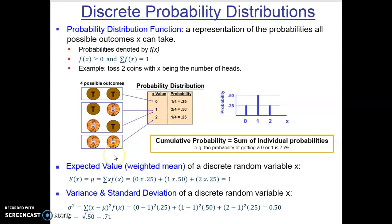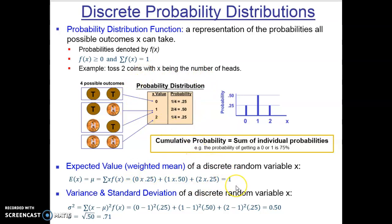We may want to calculate the expected value, also known as the weighted mean of our discrete random variable. We take each x value and multiply it by its probability — zero times 0.25, plus one times 0.5, plus two times 0.25. If you do that, you get one. So the expected value of this probability distribution is one — when you flip two coins, you expect to get one head. That's the value with the highest probability, so it makes sense.